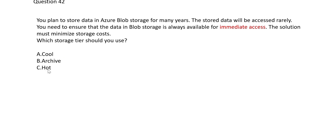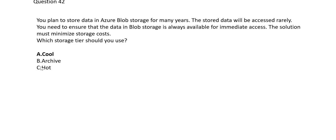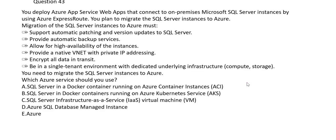Since the keyword is immediate access, we switch to either hot tier or cool tier. Hot is more expensive. Since we need to minimize storage cost, cool is better. Cool allows immediate access, and data must be stored for at least 30 days. So the final answer is option A — cool tier.